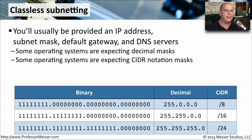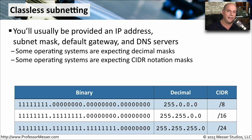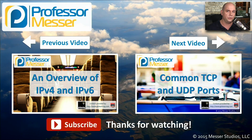Whether you use a decimal subnet mask or a CIDR block notation generally depends on the operating system or the application that you're using. You'll almost always have an IP address that needs to be assigned with the subnet mask, you'll almost always provide a default gateway, and if you're going to be communicating on the internet, there's always going to be a DNS server associated with this. Since some operating systems expect a decimal subnet mask and others expect CIDR block notation, you want to memorize exactly the format so that you can convert back and forth between them.